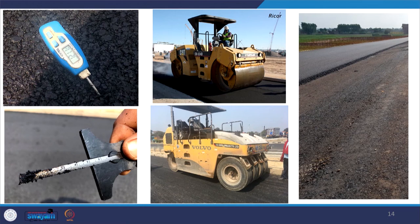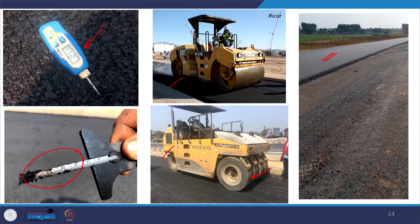Temperature is very important during compaction and should be continuously monitored. The final thickness must also be checked as per the design specification after compaction, to ensure that the required depth is reached. These steps give us an idea about the production of bituminous mixtures in the plant and the final compaction in the field.